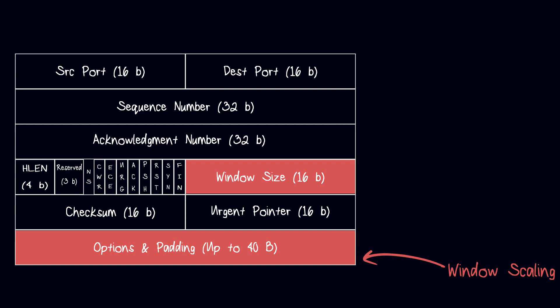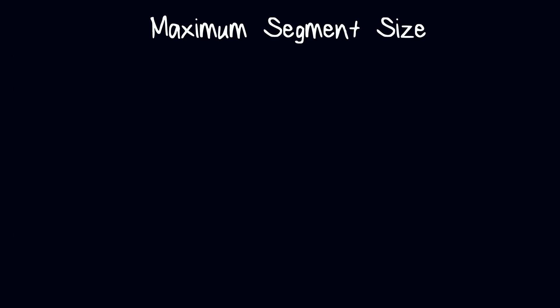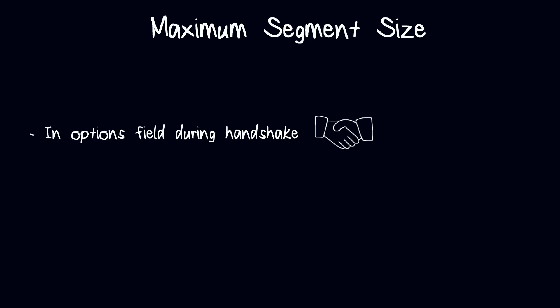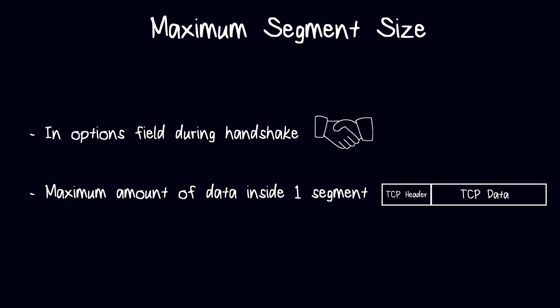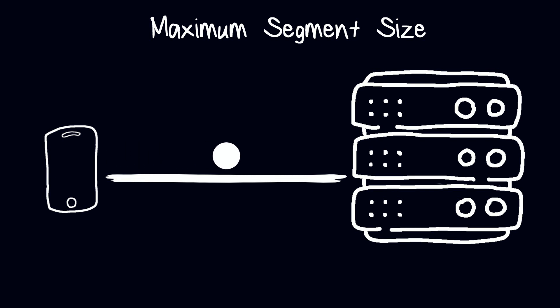The options field can also include timestamps and maximum segment size. The maximum segment size is a parameter located in the options field that specifies the maximum amount of data a TCP segment can hold — the largest amount of data that a sender can transmit to a receiver in a single packet without fragmentation.